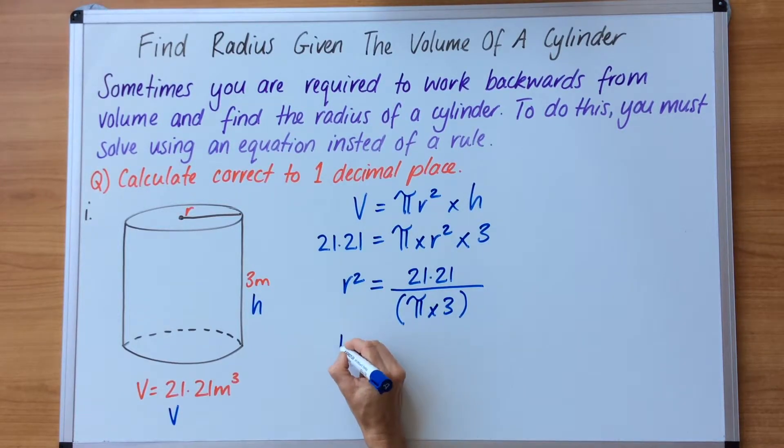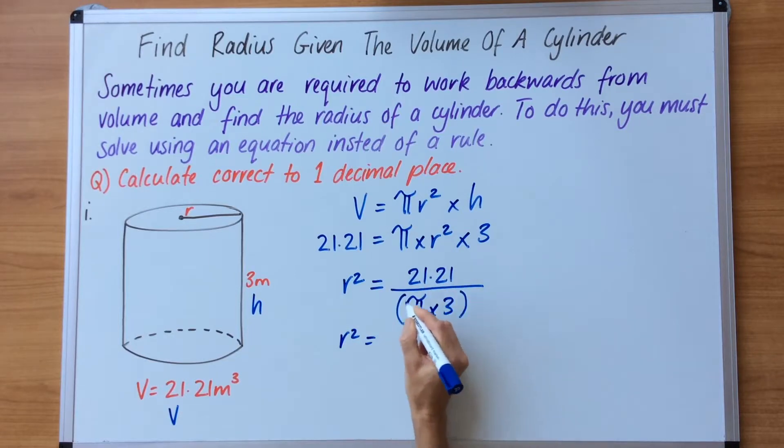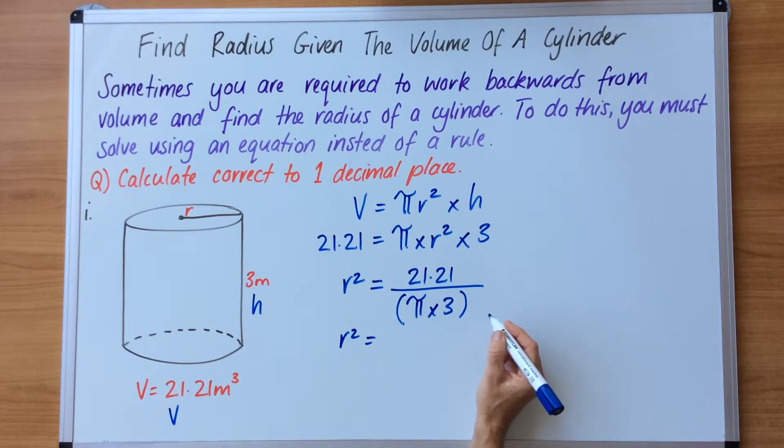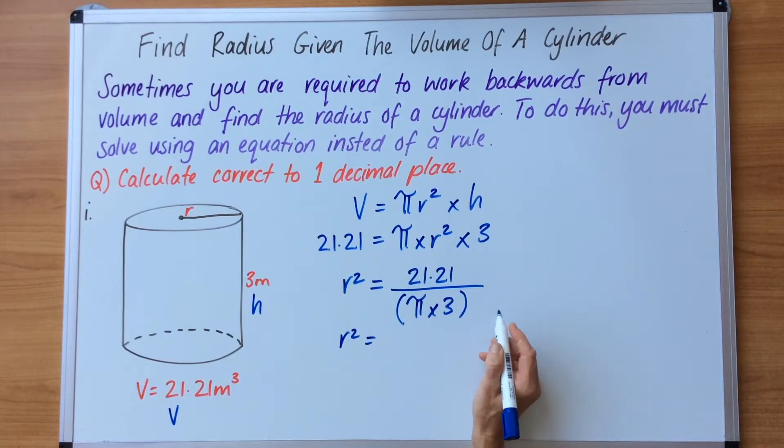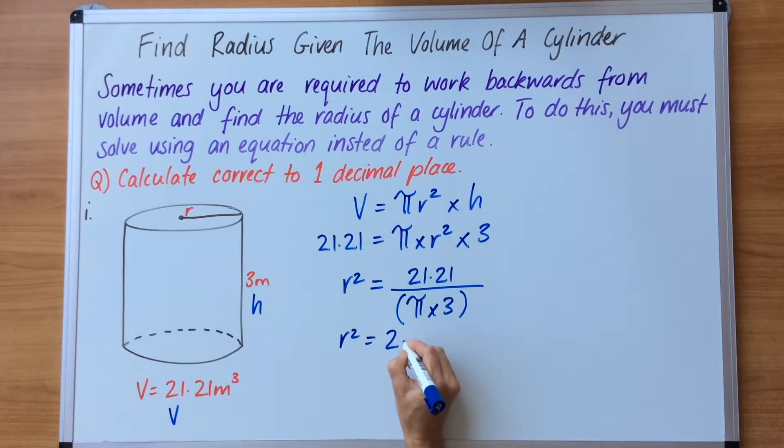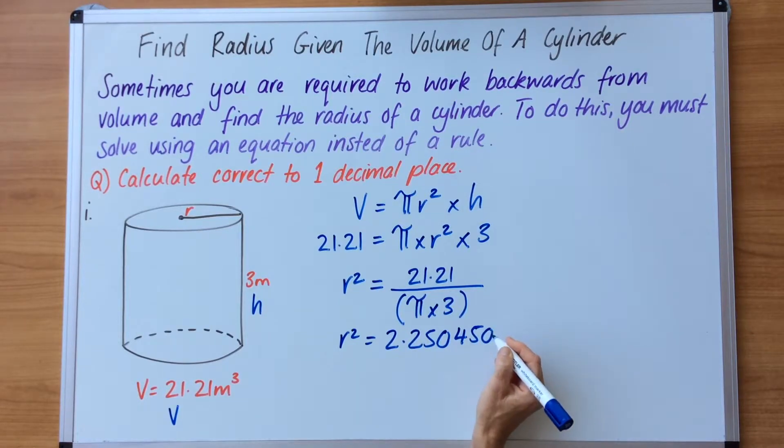So now we continue based on what we have here. So if we punch into our calculators 21.21 ABC fraction line, bracket, pi times 3 bracket equals, we are going to get this number: 2.250450895.